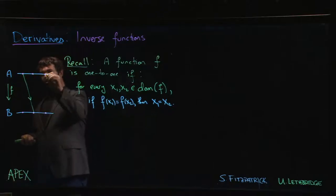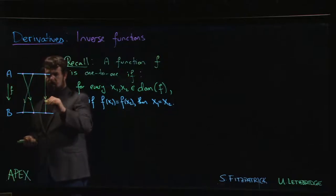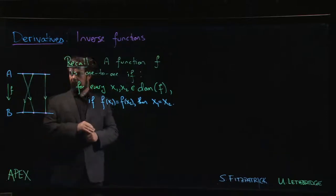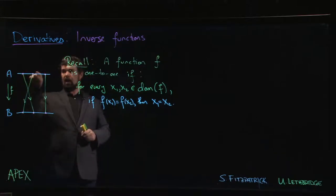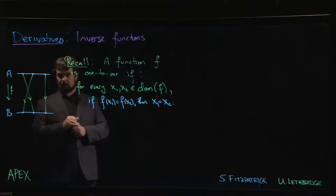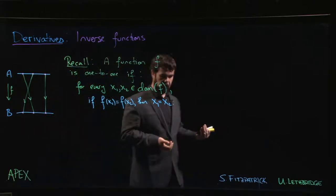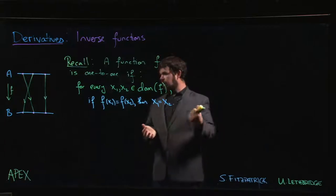A one-to-one function is one where each element gets sent to somewhere different. To be a function we can only have one arrow coming out of each element of the domain. To be a one-to-one function you can only have one arrow going in to each element of the codomain. You can't have two arrows both going to the same point—then you wouldn't have a one-to-one function.